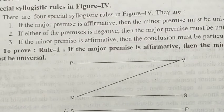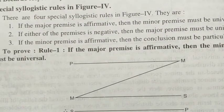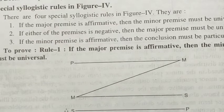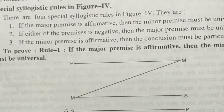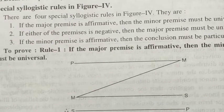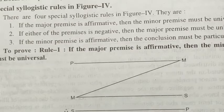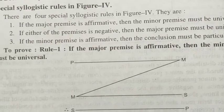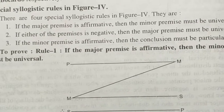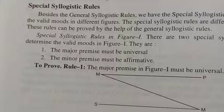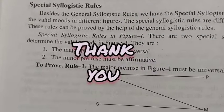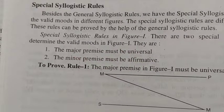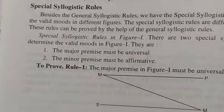So there are four figures with special syllogistic rules: Figure 1 has two rules, Figure 2 has two rules, Figure 3 has three rules, and Figure 4 has four rules. Thank you — I will come with a new video in the next session.